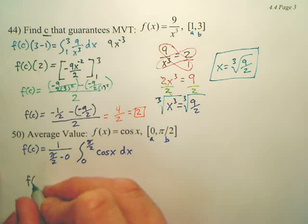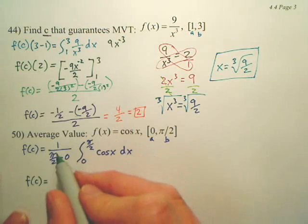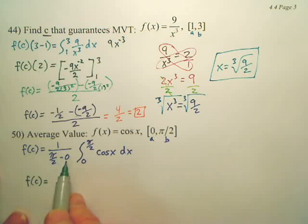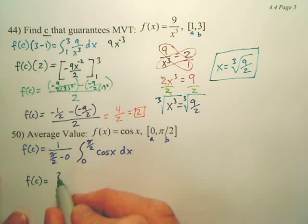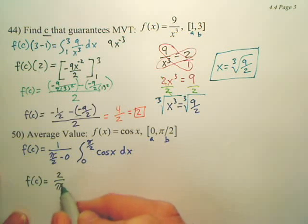So we now have f of c is equal to 1 over, this minus 0, it's pi over 2. We divide by it, it becomes a 2 over pi.